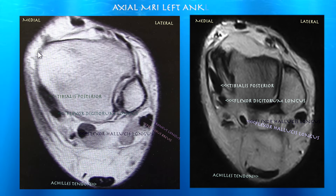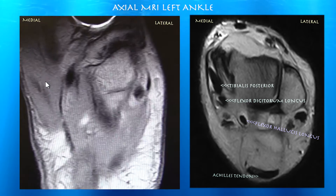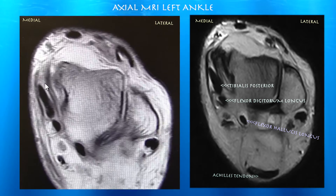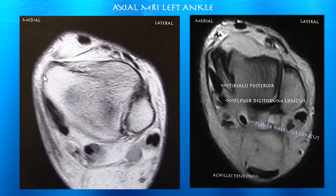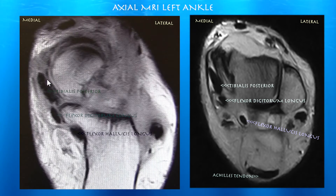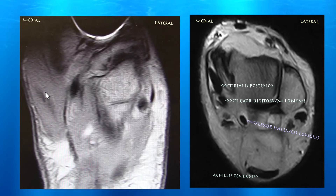Here's his MRI that he presented with. You can see the tibialis posterior tendon is enlarged and there's some fluid around it. MRI of the left ankle — you can see the swollen, very enlarged tibialis posterior tendon. Typically it could be twice the size of the flexor digitorum longus tendon, but in this case it's about three times bigger, or perhaps even four times bigger, consistent with swelling and tendinosis.